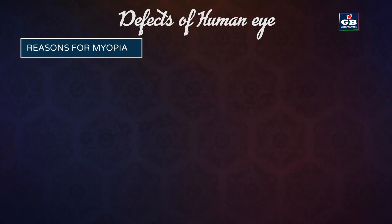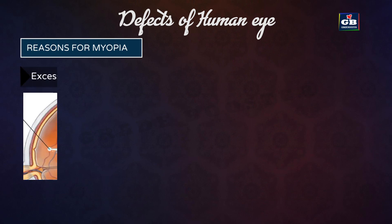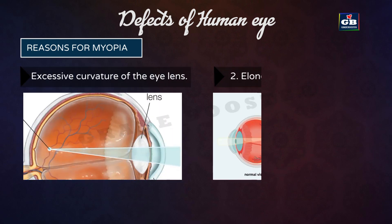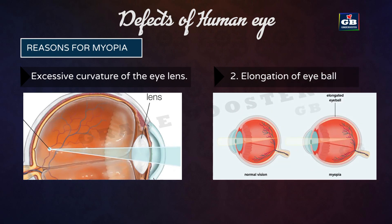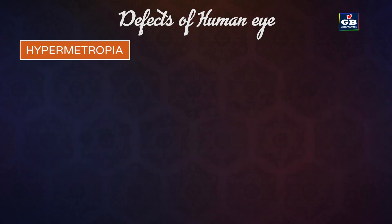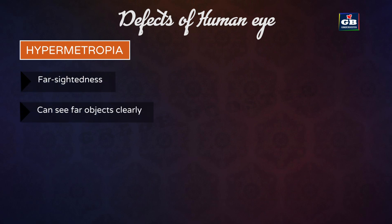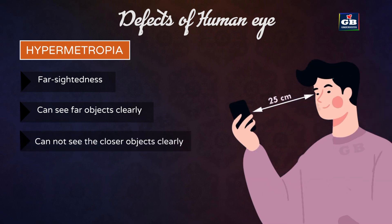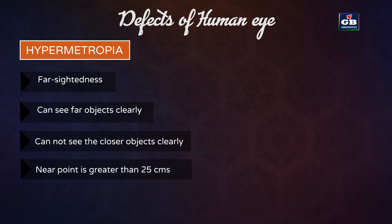Reasons for myopia: there are two reasons — one, excessive curvature of the lens; two, elongation of the eyeball. Hypermetropia: this defect of the eye is called farsightedness. Persons with this defect can see far objects clearly but cannot see nearby objects clearly.